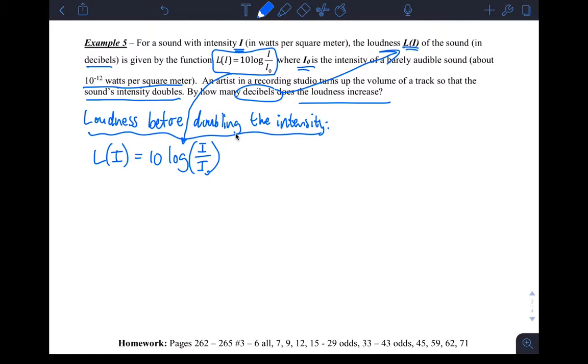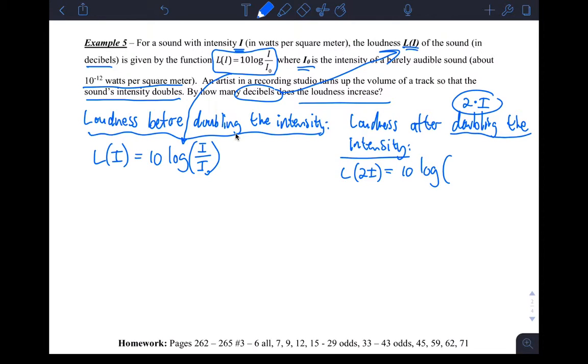And then the question is, loudness after doubling the intensity, what is that? Okay, so doubling the intensity means two times i. That's what doubling the intensity means, okay? So I'm going to substitute two times i instead of i. So basically what I have is L of two times i, which is 10 log base 10 of two times i over i sub zero. So, okay, I have two expressions. One is the loudness after doubling, one is the loudness before doubling.